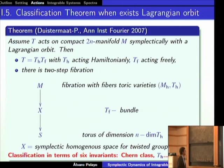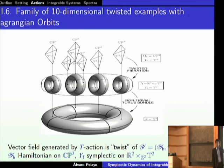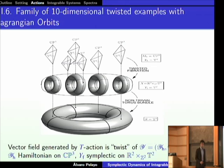Here is a picture of an example: a 10-dimensional symplectic manifold with a five-dimensional torus action with Lagrangian orbits. It is constructed as a torus bundle over a torus (the Kodaira-Thurston manifold) over which there is a fibration by toric varieties CP^3. A three-dimensional torus acts on each fiber in a Hamiltonian way, and a two-torus acts on the base and permutes the fibers. In the free case you just have a torus bundle over a torus; in the Hamiltonian case, a toric variety; and with a Lagrangian orbit you get a mixture of both.